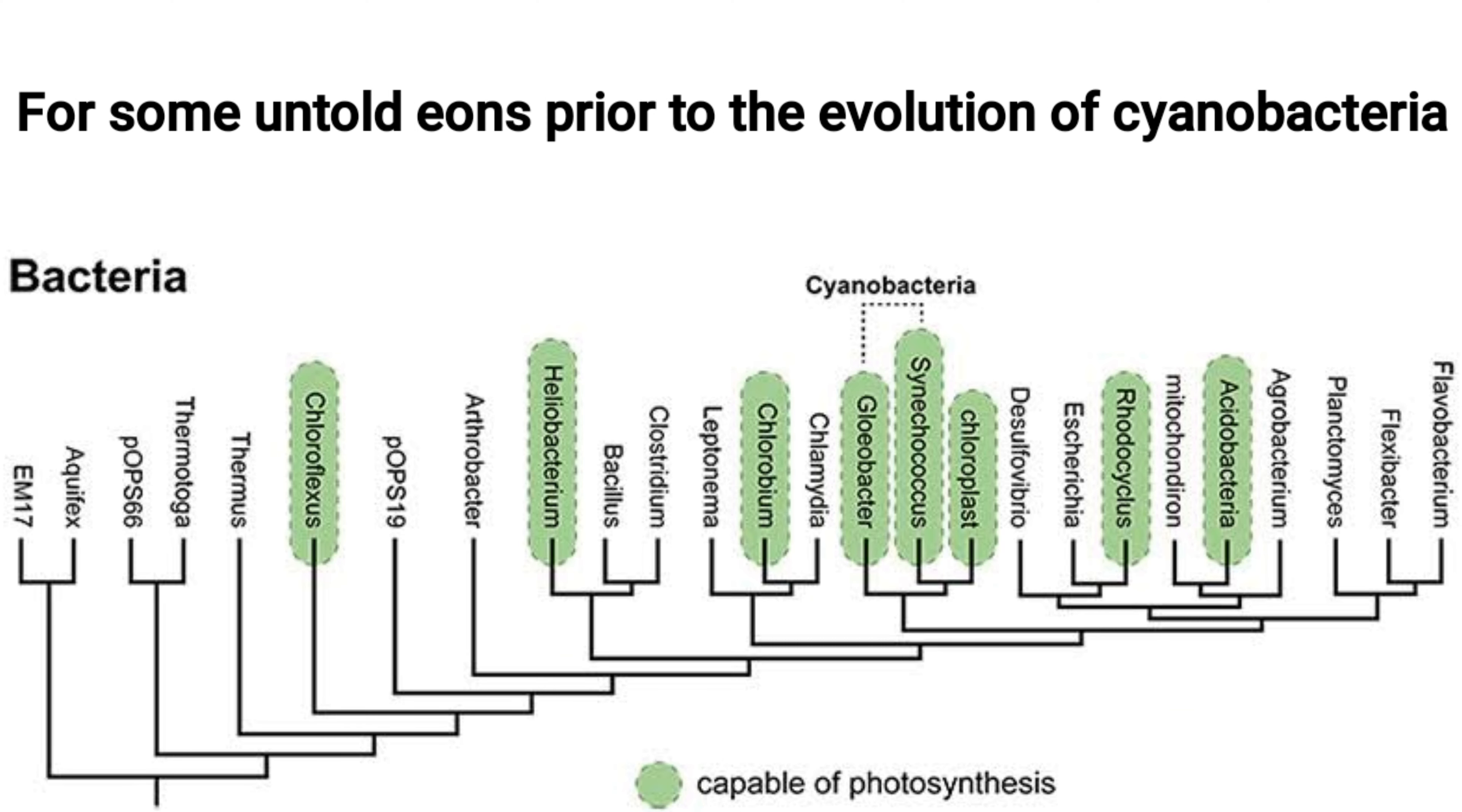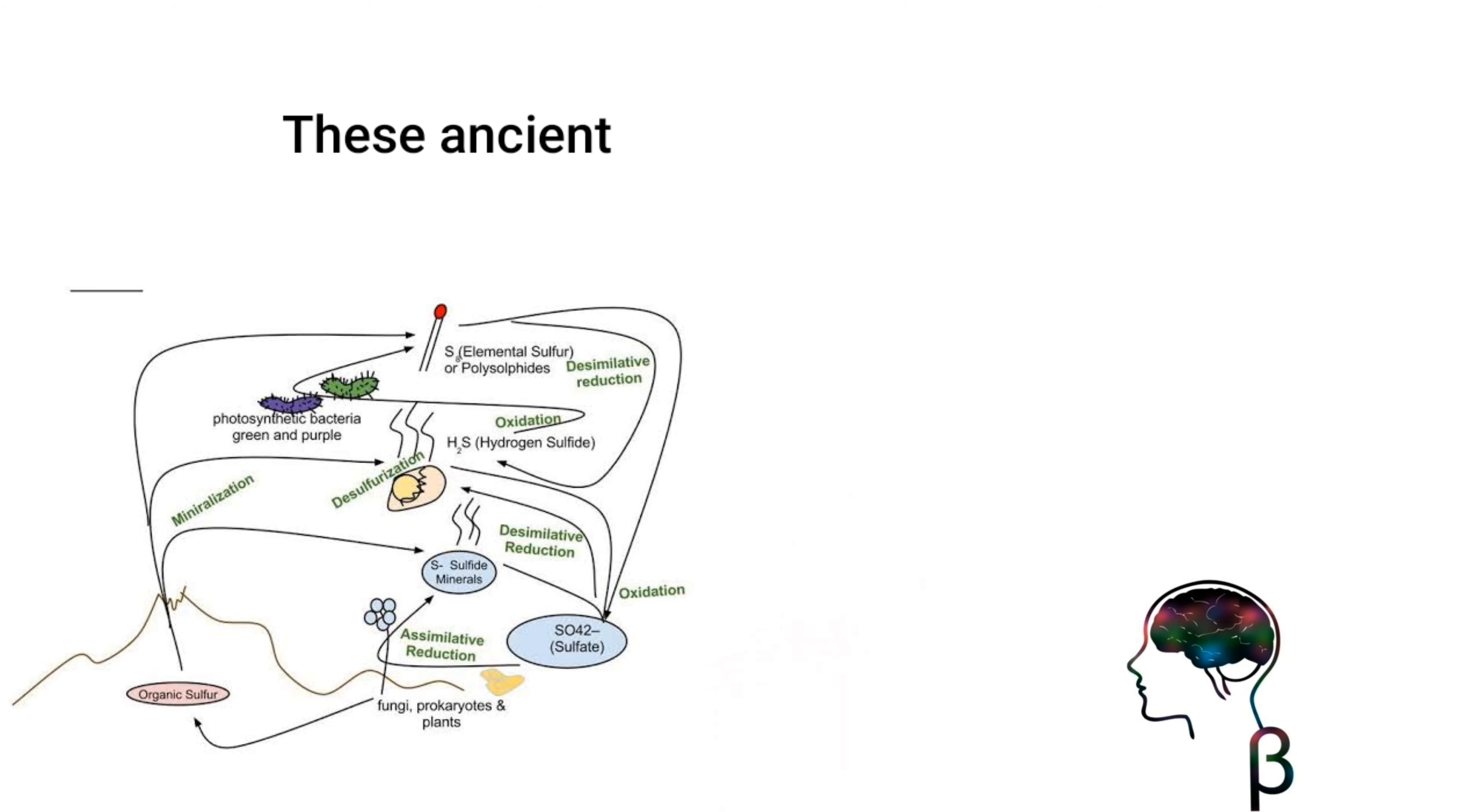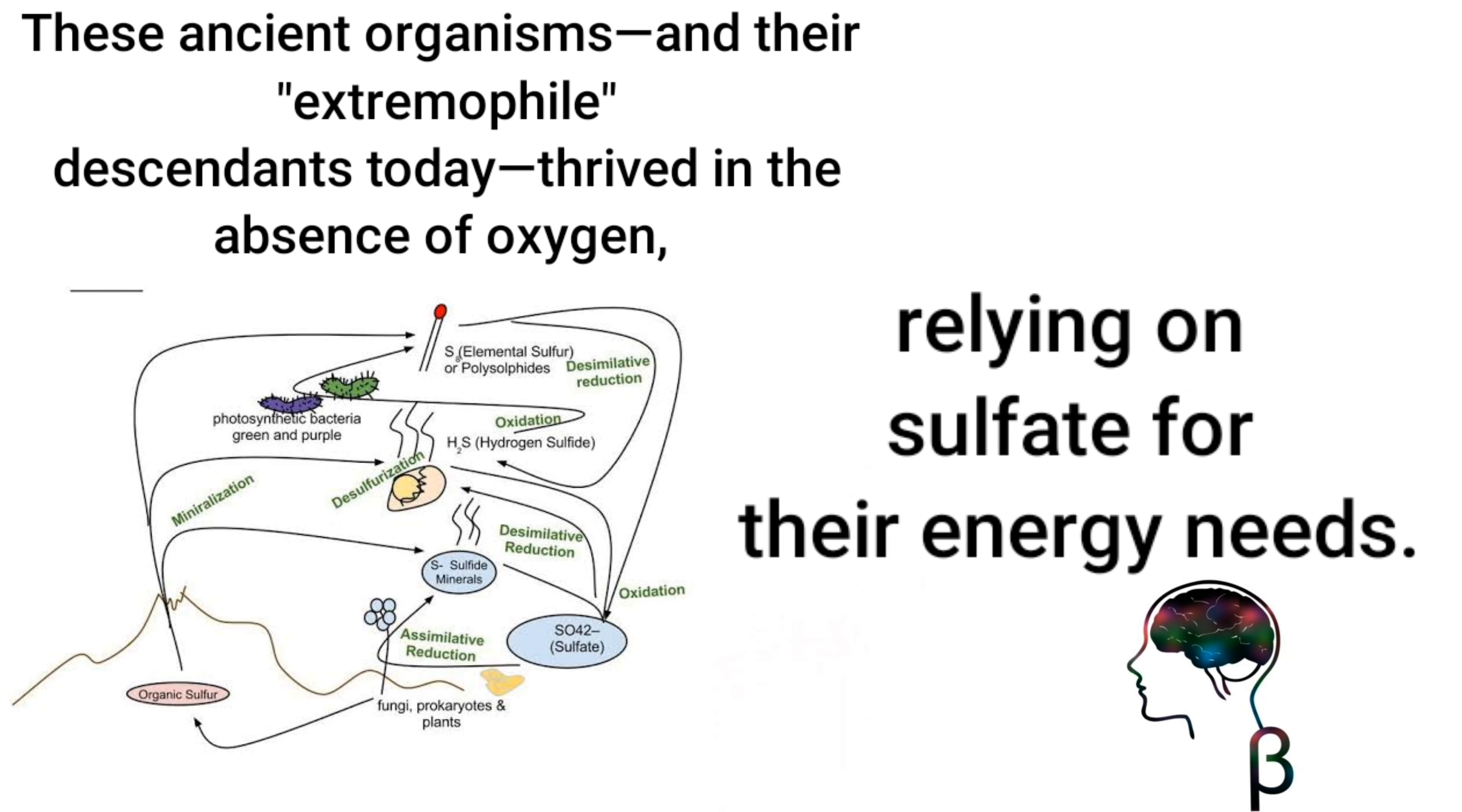For some untold eons prior to the evolution of cyanobacteria during the Archean Eon, more primitive microbes lived the real old-fashioned way: anaerobically. These ancient organisms and their extremophile descendants today thrived in the absence of oxygen, relying on sulfate for their energy needs.